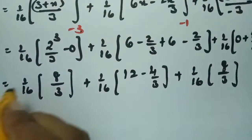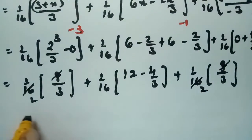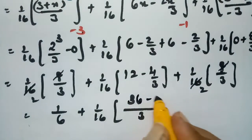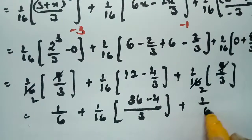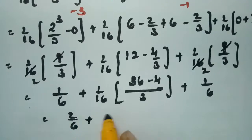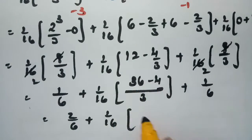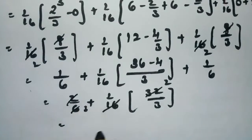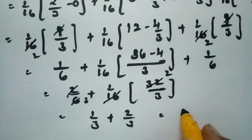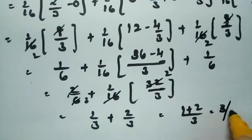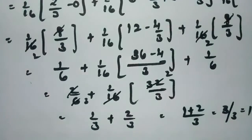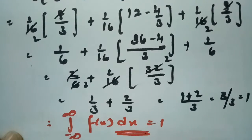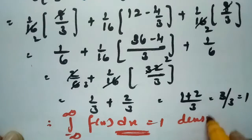For the middle integral from -1 to 1: substituting gives (1/16)(12 - 4/3). Taking LCM of 3: this becomes (1/16)(32/3). Combining all three pieces: (1/16)(8/3) + (1/16)(32/3) + (1/16)(8/3) = (1/3) + (2/3) = 1. Therefore the total integral from -∞ to +∞ of f(x) dx equals 1, confirming f(x) is a density function.